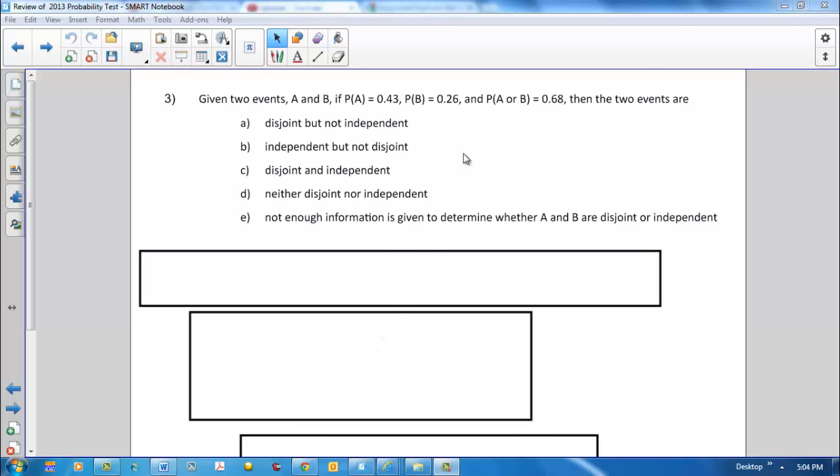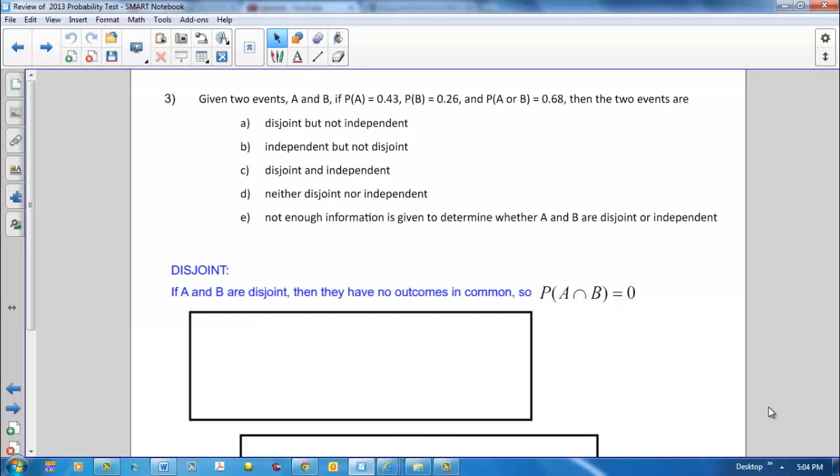Well, it looks like we have to know what disjoint and independent mean, so let's start there. Recall that two events are disjoint, two events A and B are disjoint, if they have no outcomes in common. If they have no outcomes in common, that means their intersection is equal to 0.